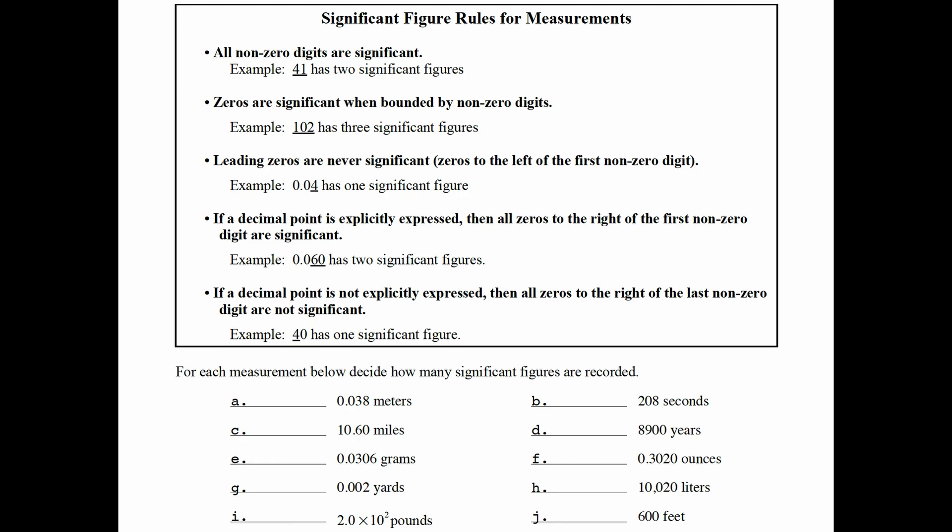Look at the examples below and use the rules given to decide how many significant figures each measurement has. Let's try the first one. 0.038 meters. How many significant figures does it have? The zeros out front are leading zeros. Those are never significant. So this measurement only has two significant figures.